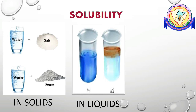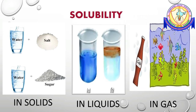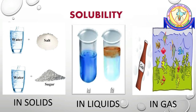Take some water in a glass tumbler and add a few drops of ink, honey, or any fruit juice — they dissolve in water. Liquids that dissolve in water are called miscible. Now add a few drops of oil or kerosene to the water and observe: these will not dissolve in water; they form a separate layer. Liquids that do not dissolve in water are called immiscible. Some gases like oxygen and carbon dioxide are also soluble in water.